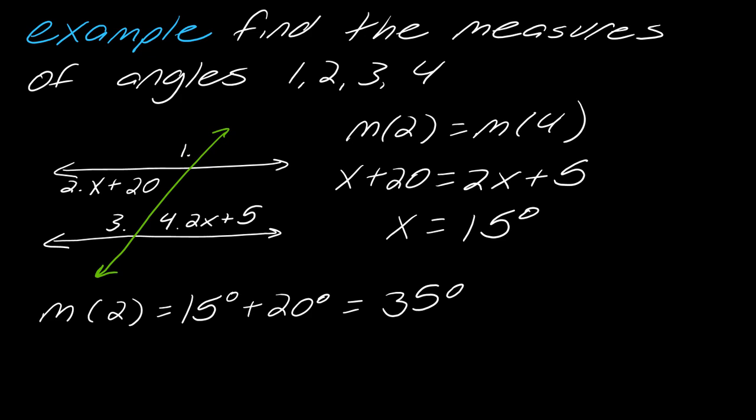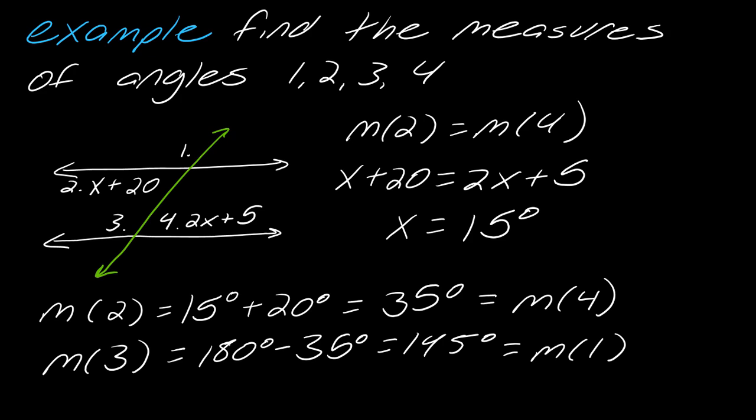And then because I know now 2 I know that's also equal to 4. I know that this third angle, this angle plus this angle has to equal 180 so I can just take this 180 minus the 35 to get the other angle measure which would be 145. And then because these are where they are placed, they're corresponding, so that's also going to be the angle of measure one.